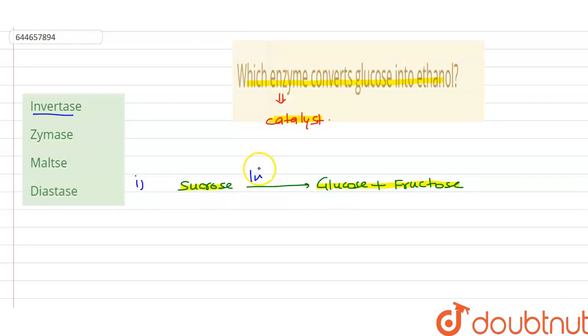Now, what is the function of zymase? Zymase is an enzyme complex that catalyzes the fermentation of sugar into ethanol and carbon dioxide. This is the function of the enzyme zymase.